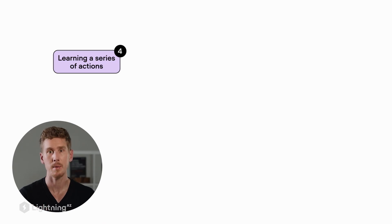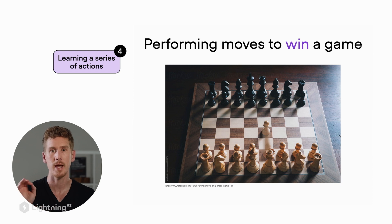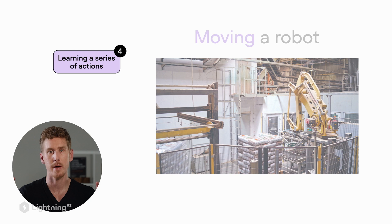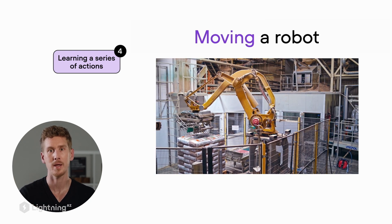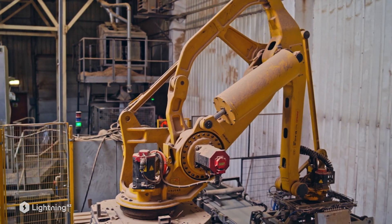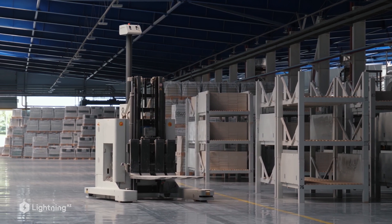The fourth and last big category of application areas is learning a series of actions. A popular and classic example of that would be teaching a machine learning model how to play chess. This is more challenging than just a simple prediction problem, because here the machine learning model has to learn how to perform a series of actions and also how to respond to the actions of an opponent. Another application area of this paradigm is moving or programming a robot so that it can move around on its own — very commonly used today in warehouses where robots navigate complex environments, finding packages and stocking shelves.